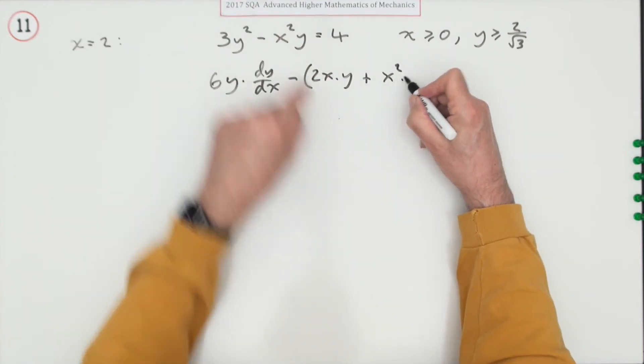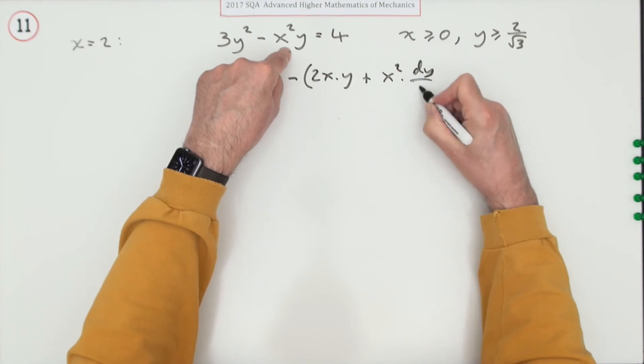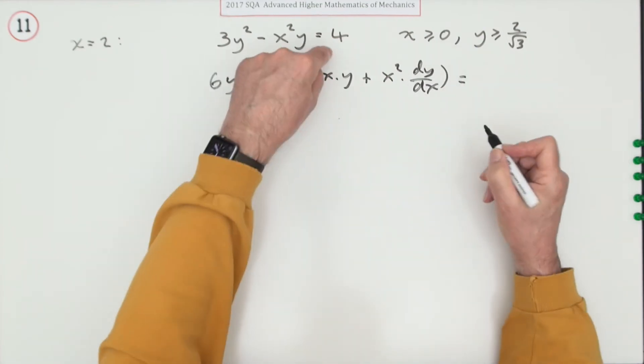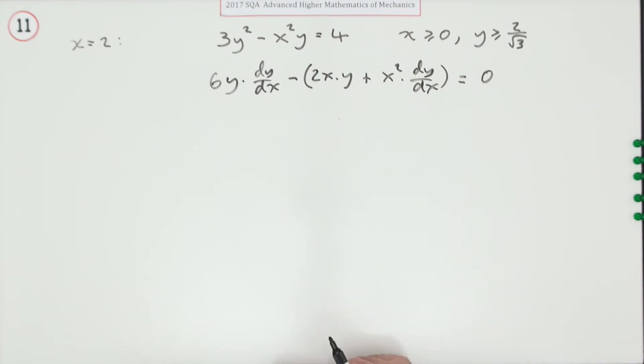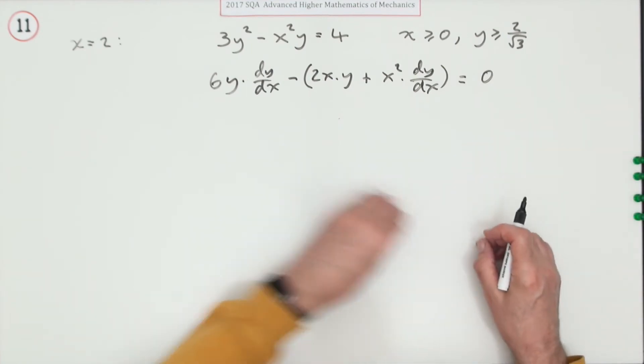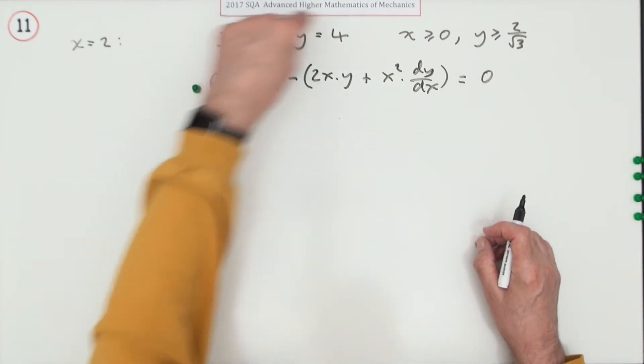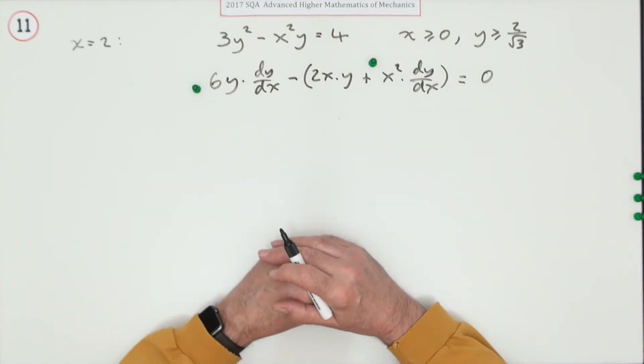Differentiating the constant gives zero. There are two marks: one for differentiating the 3y^2 term along with the constant, and one for differentiating the product.